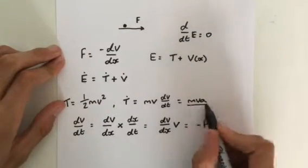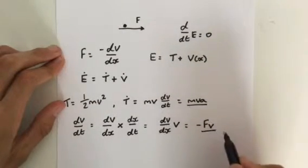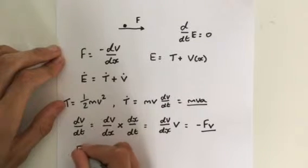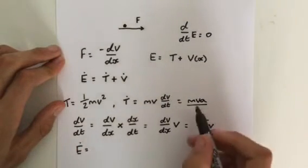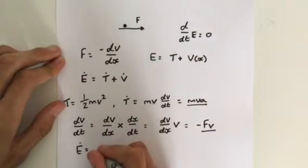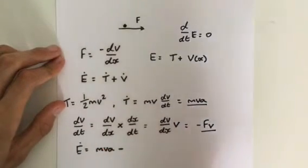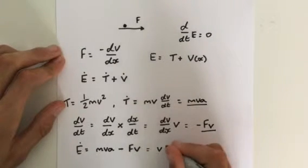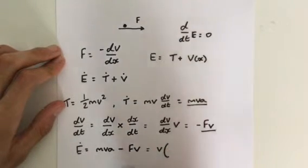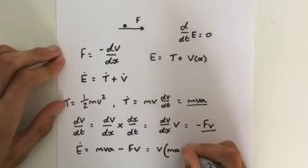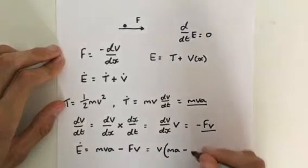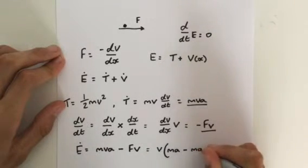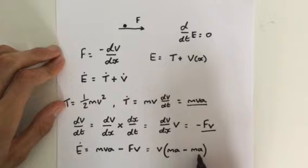So overall, we have mvA and negative Fv. So our total energy E-dot is going to equal T-dot, which is mvA, minus our force times velocity. We factor out v to get v multiplied by mA minus F, which is the force.